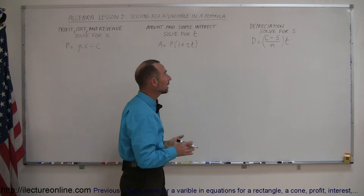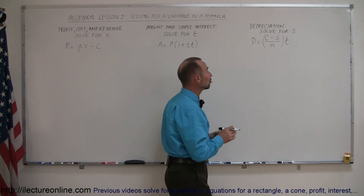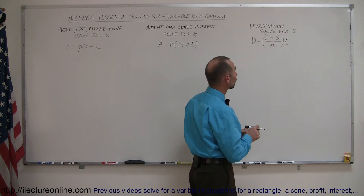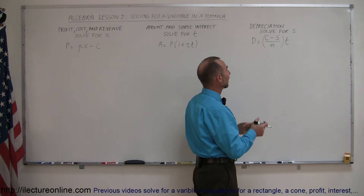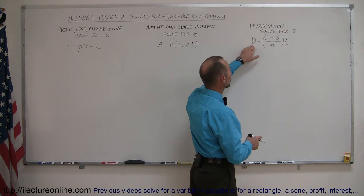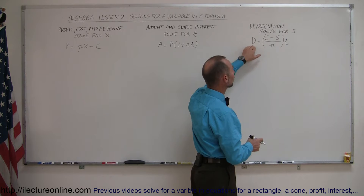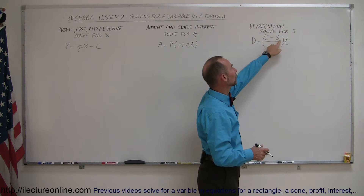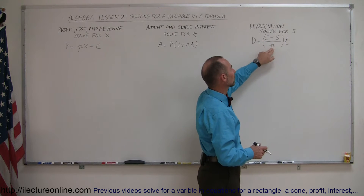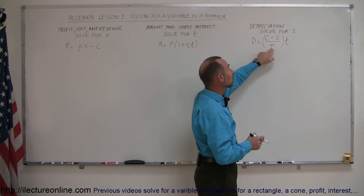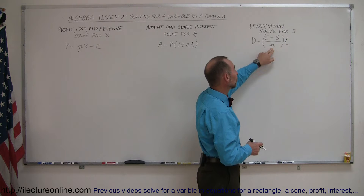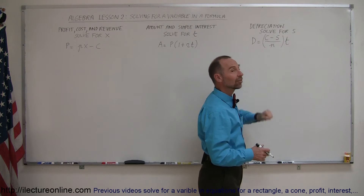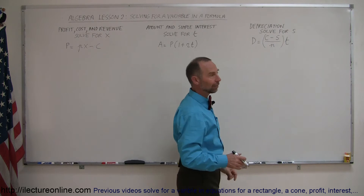Solve that for time. And here we have the depreciation equation — solve for s — where the depreciation quantity is equal to the cost minus the salvage value, divided by the number of years you depreciate it over, times the time that has elapsed.